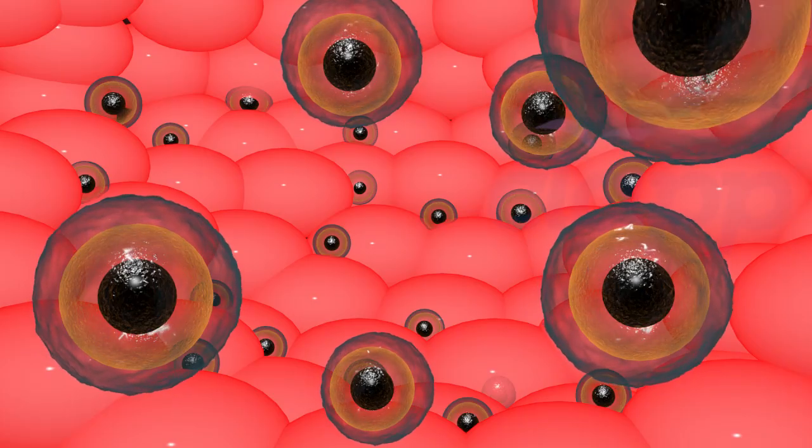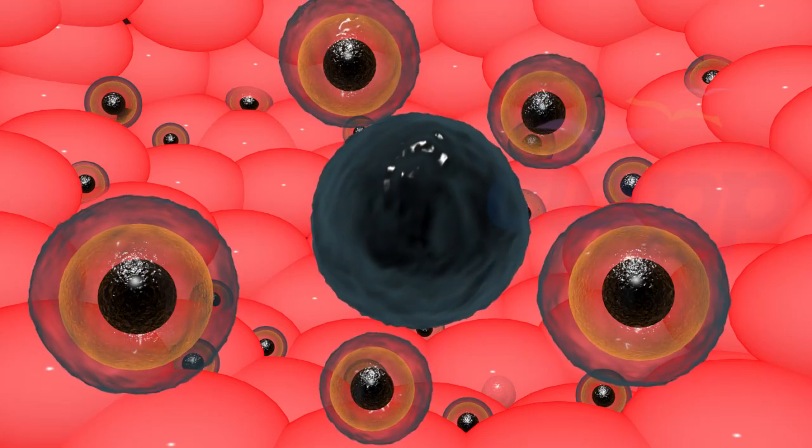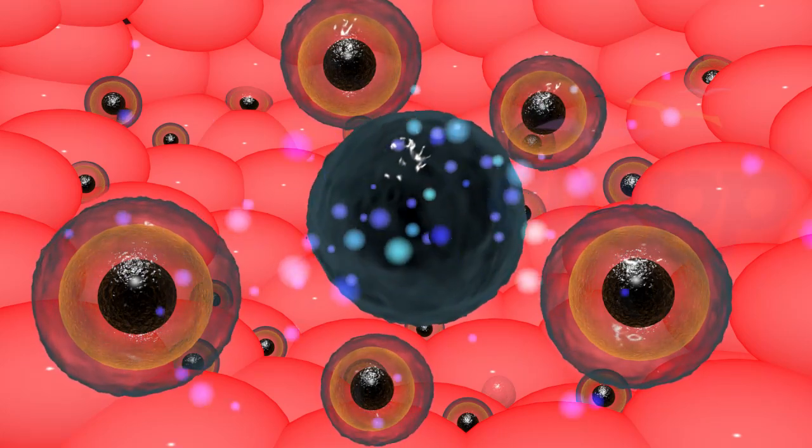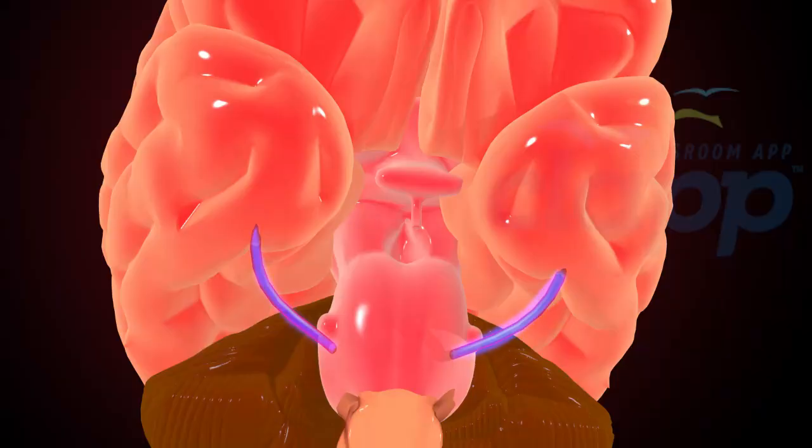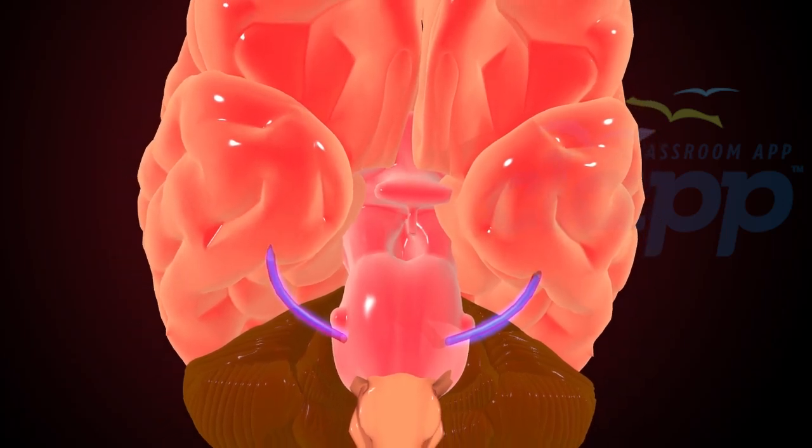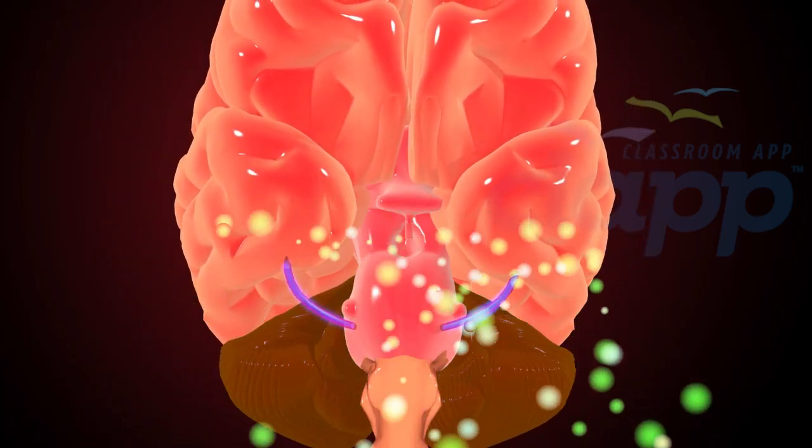After the egg is released, the follicle then seals over and is called the corpus luteum. The corpus luteum starts producing progesterone. This progesterone has a negative feedback effect on the GnRH to reduce it and keep its frequency in a normal range.